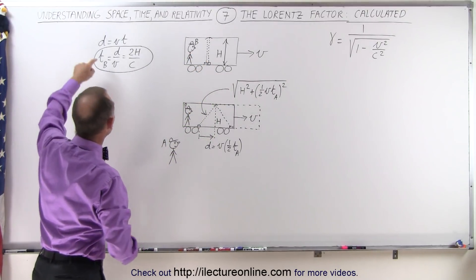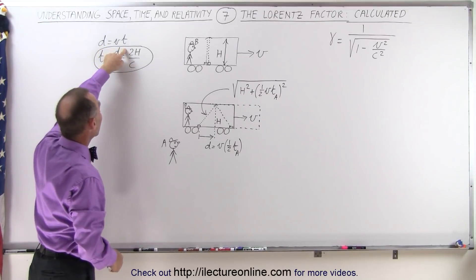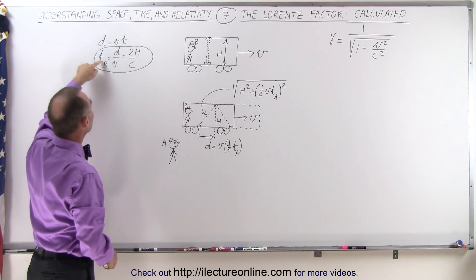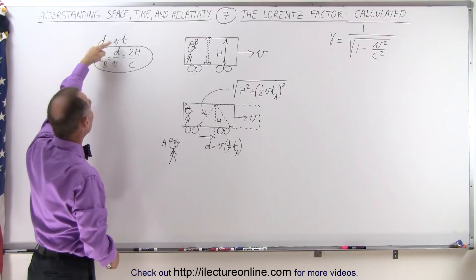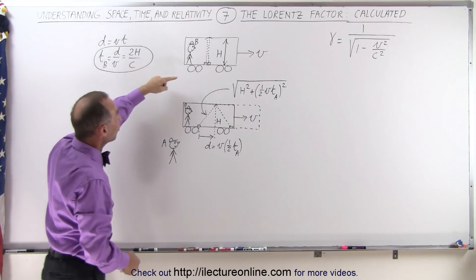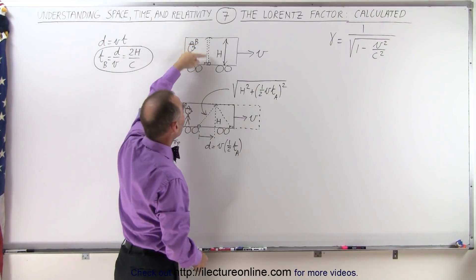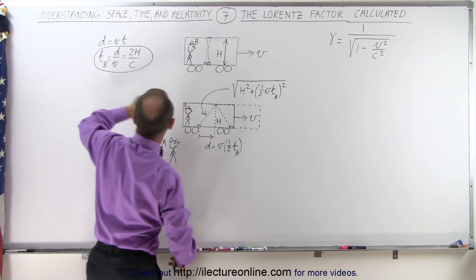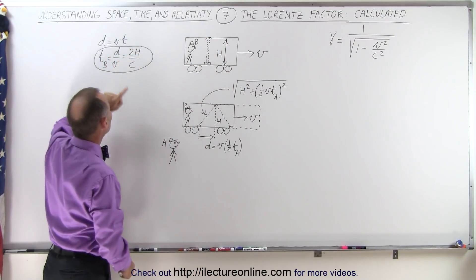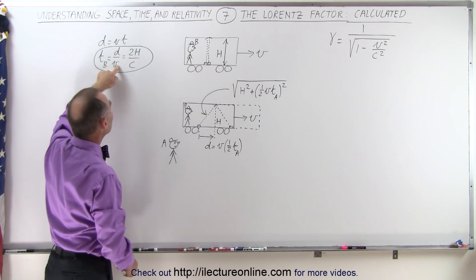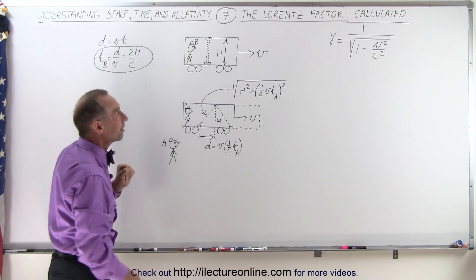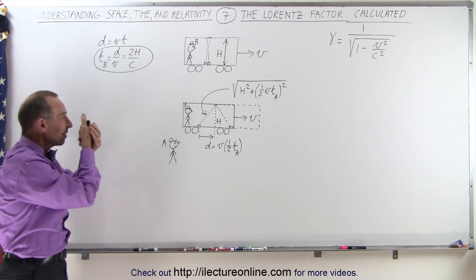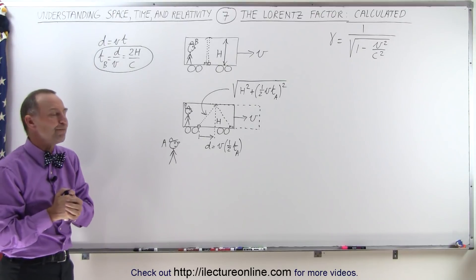We know that distance equals velocity times time, so the time measured by B must equal distance divided by velocity. The distance covered by the light is twice the height of the railroad car — H is the height — so the distance is 2h. The speed is the speed of light C, giving us 2h divided by C. That's the time as measured by B.